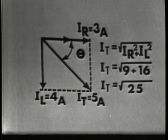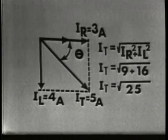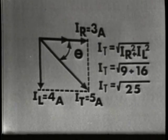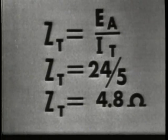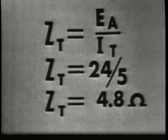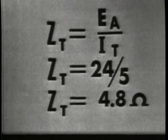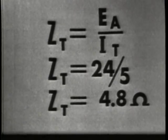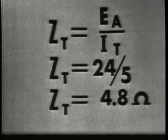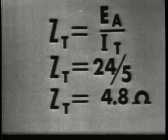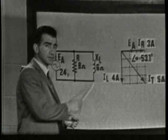Once total current is known, the total impedance of the circuit may be found simply by applying Ohm's Law. ZT equals EA over IT, or 24 over 5. The total impedance is equal to 4.8 ohms, which you will note is less than the smallest impedance in the circuit.